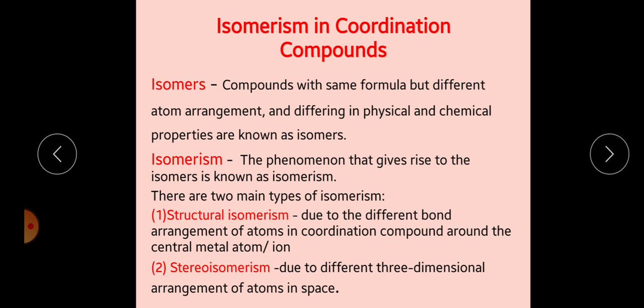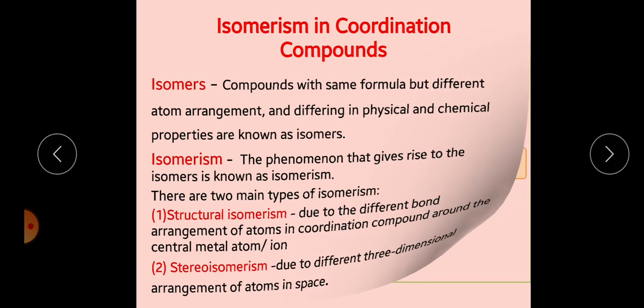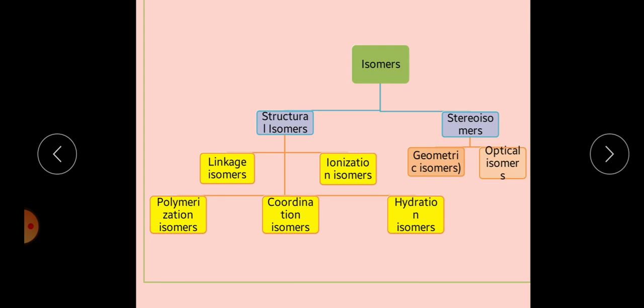Now we will discuss structural isomerism. This diagram displays the types of isomerism for coordination compounds. Isomers are of two types: structural isomers and stereoisomers. Stereoisomers can be divided into two parts: first is geometrical isomers and second is optical isomers.